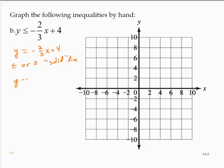So I have a y-intercept of 0, 4 and a slope of negative 2/3. 0, 4, slope of negative 2/3. So down 2 and right 3. Down 2 and right 3. Drawing a solid line through those points.